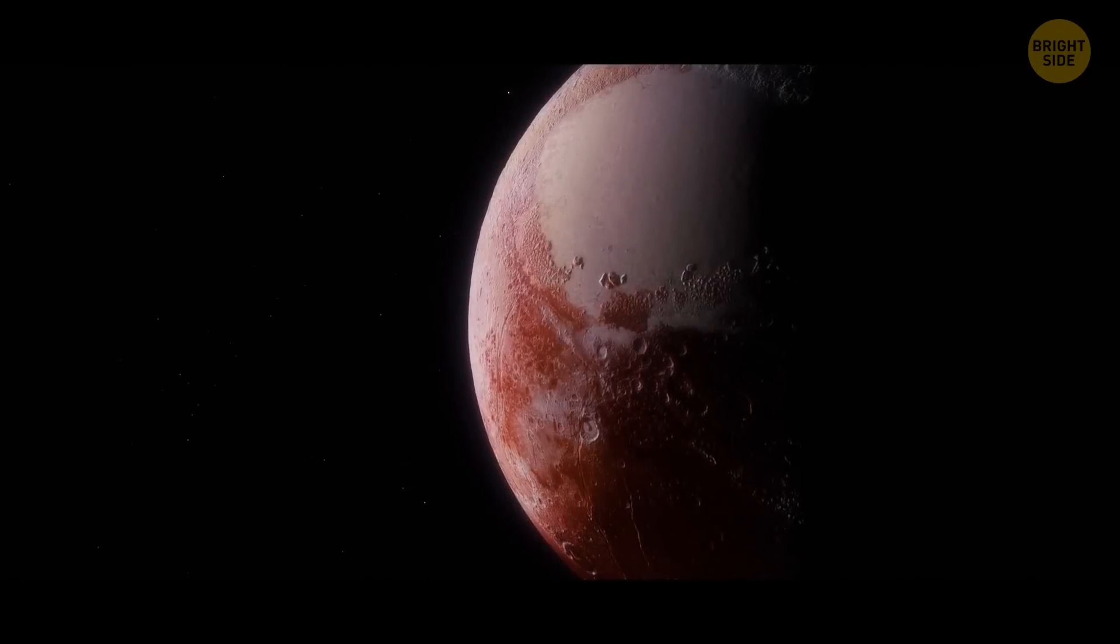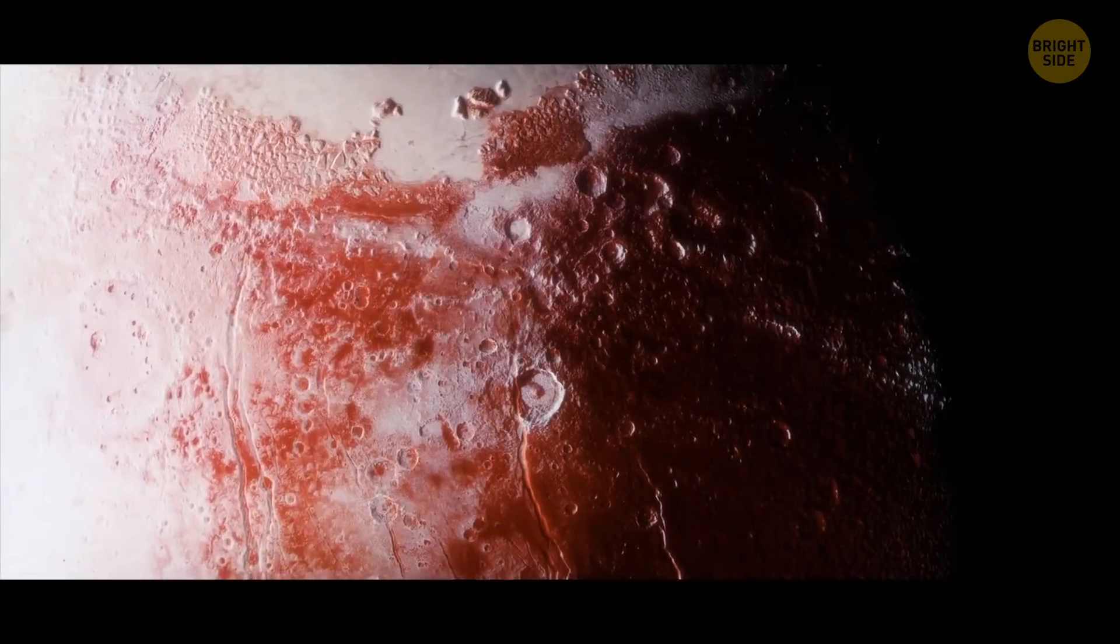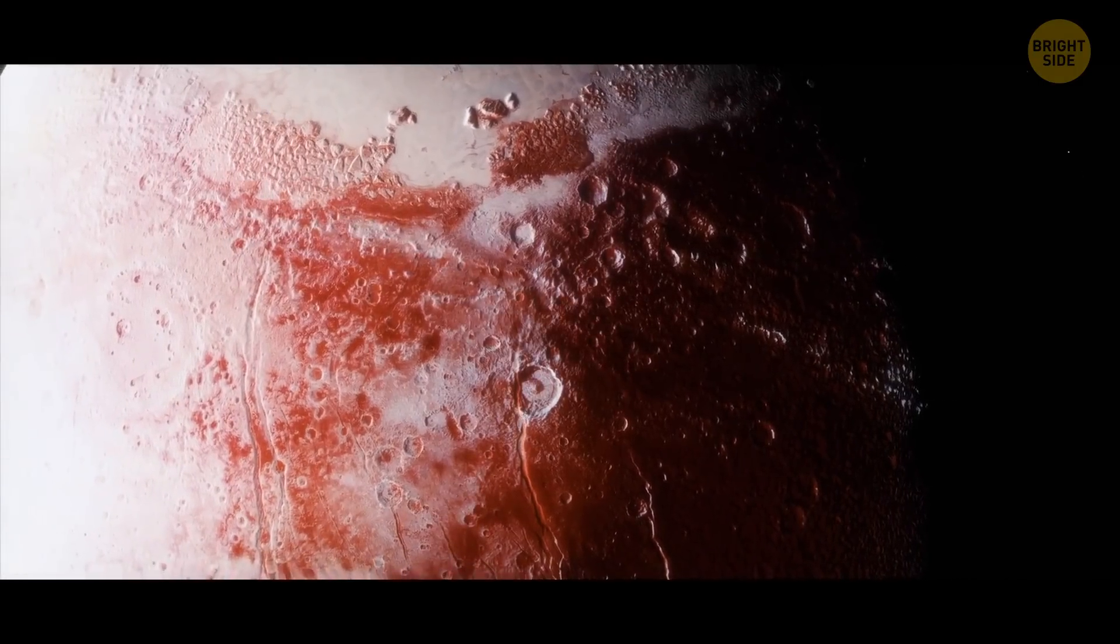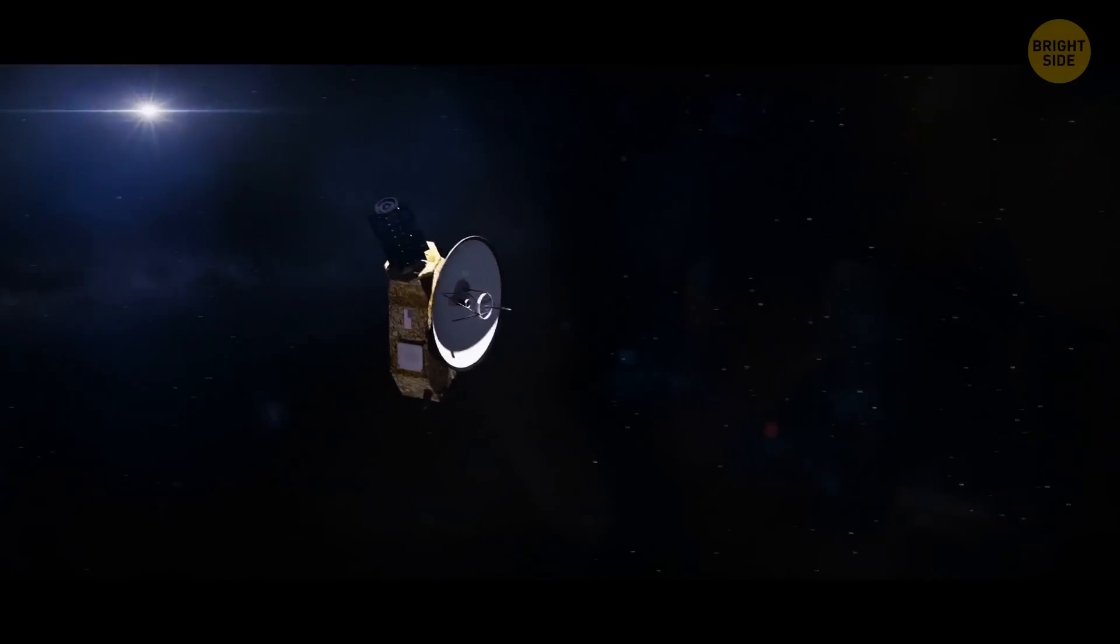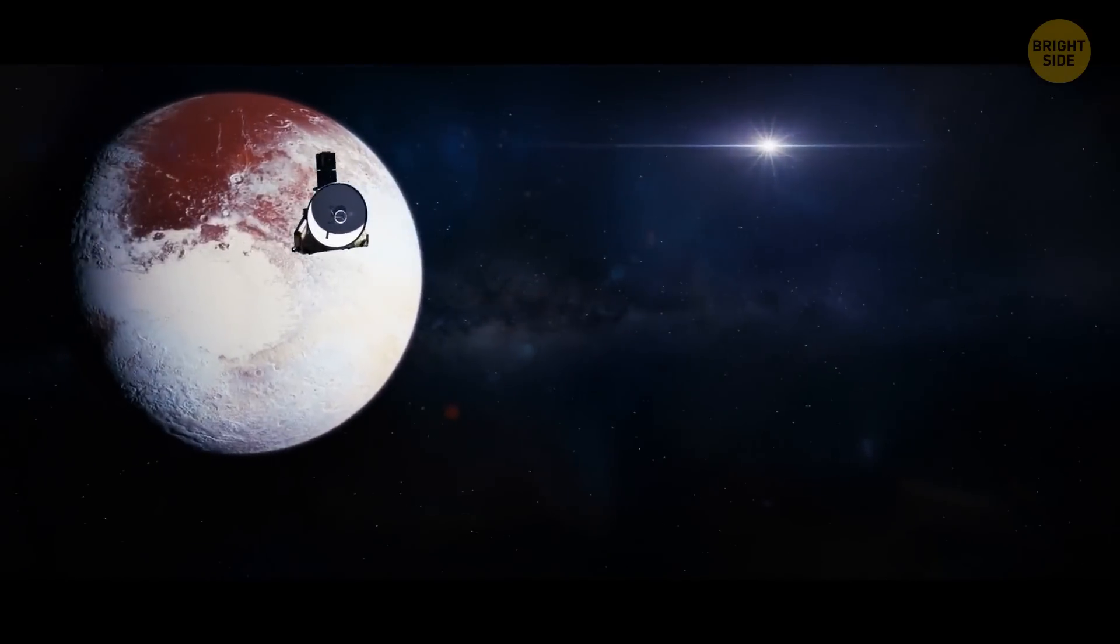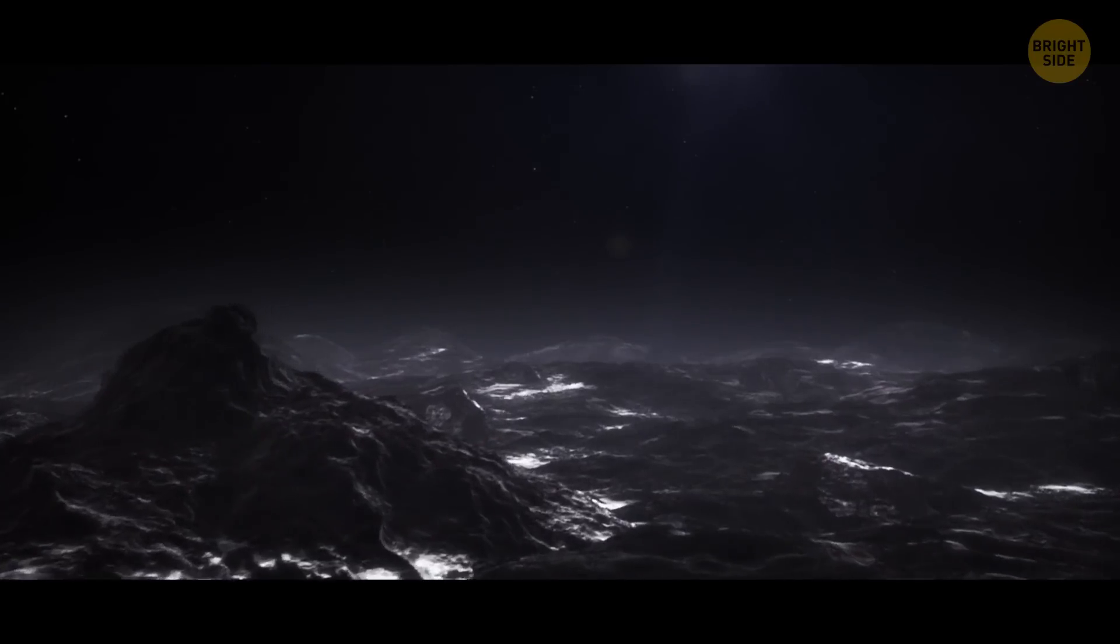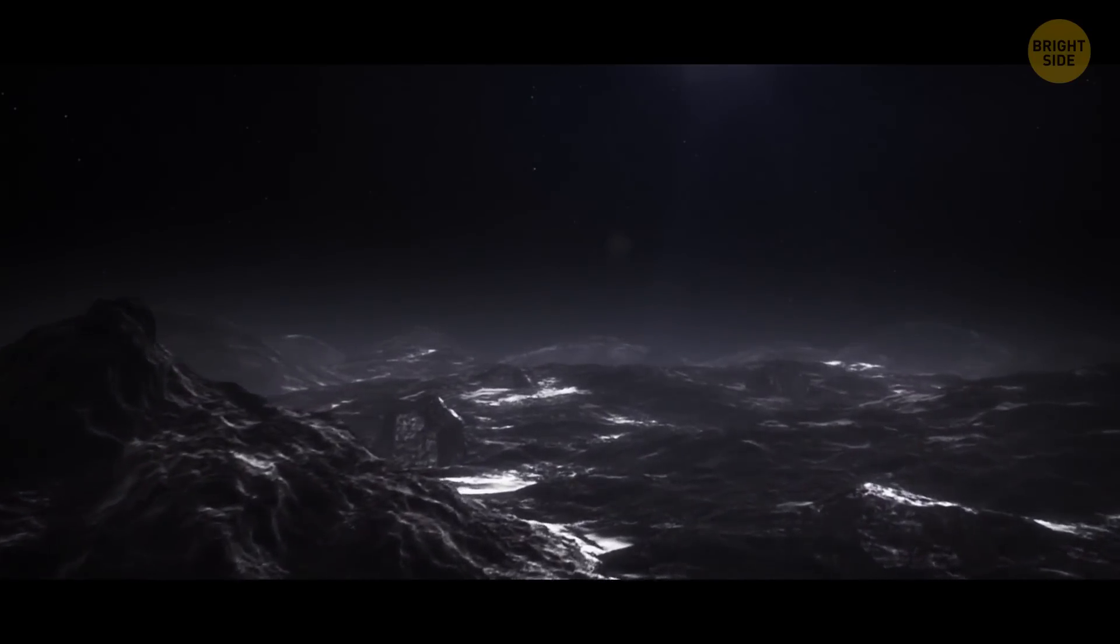Pluto has some water too. Astronomers even think the dwarf planet might be up to 30% water. But it's frozen. Unlike Mercury, Pluto's too far away from the Sun, which is why all its water is in the form of ice.